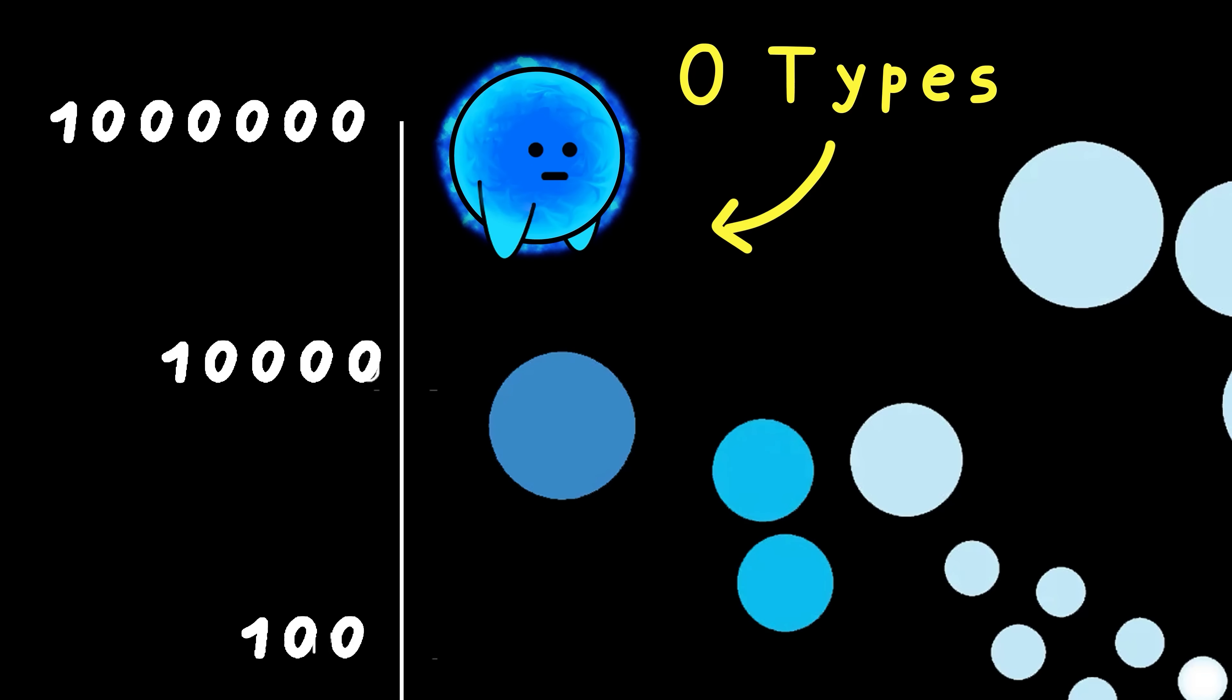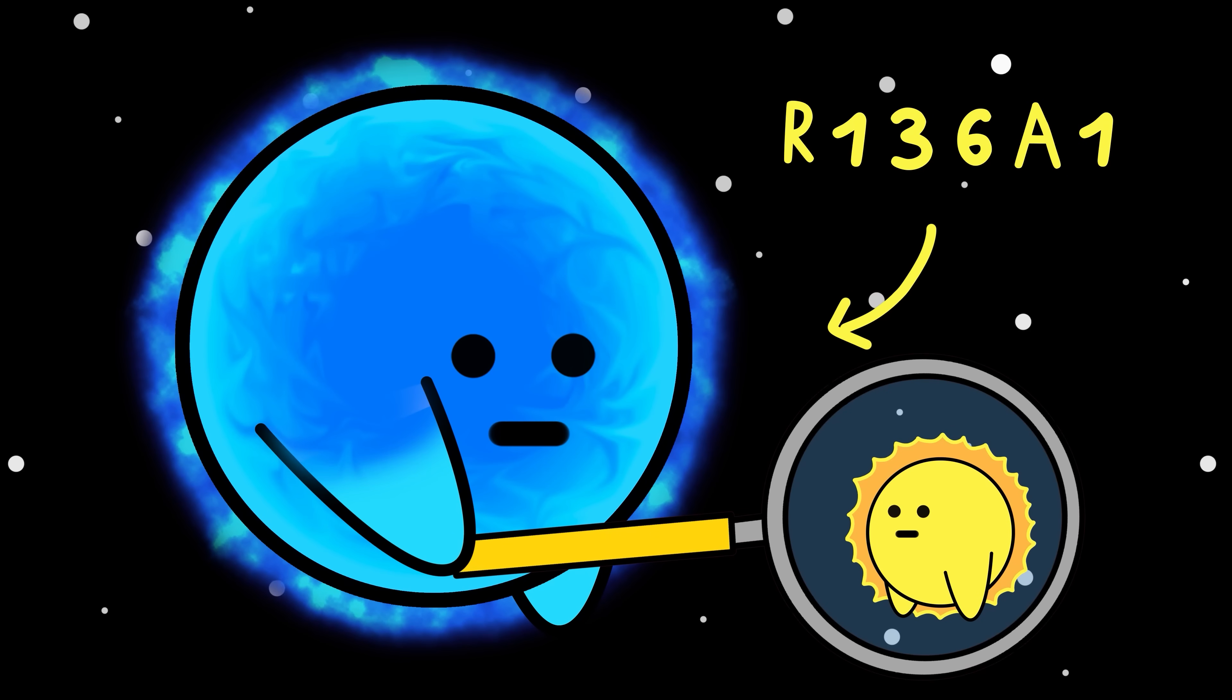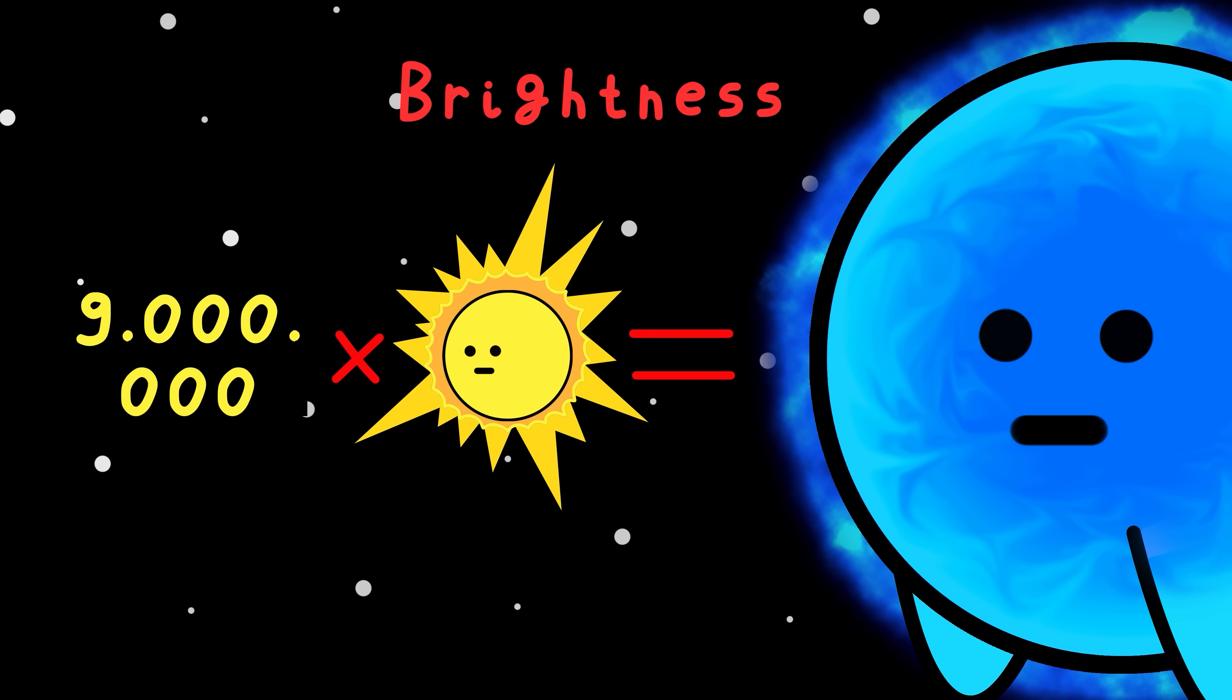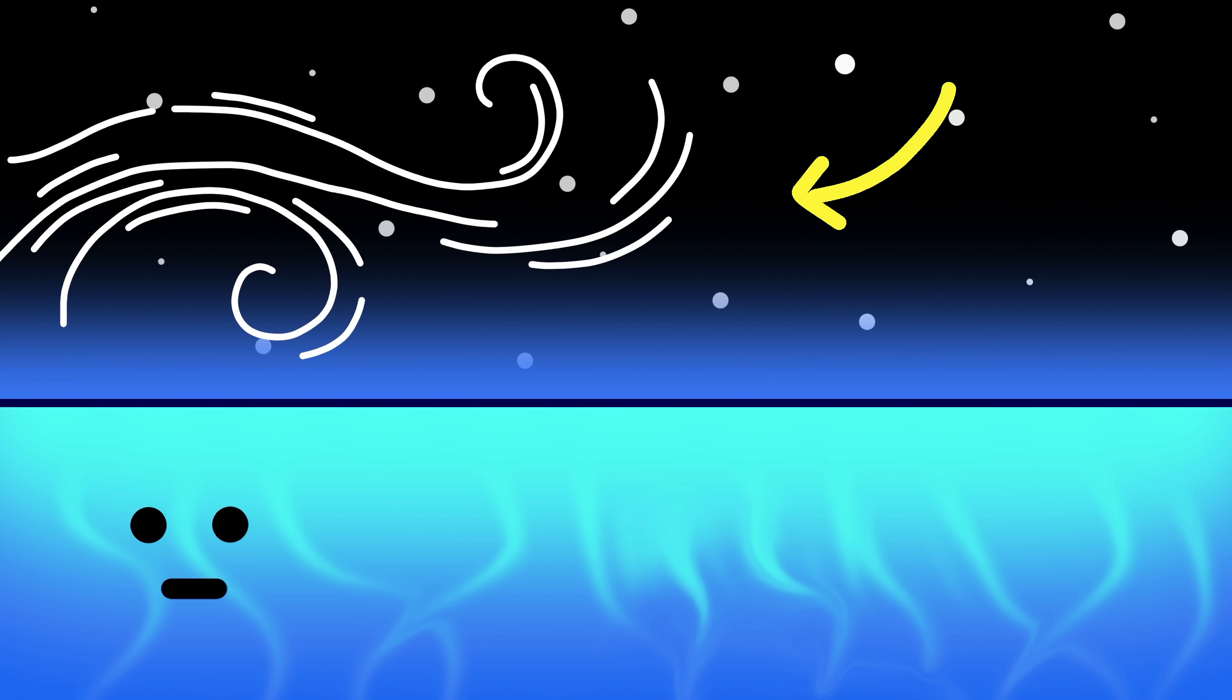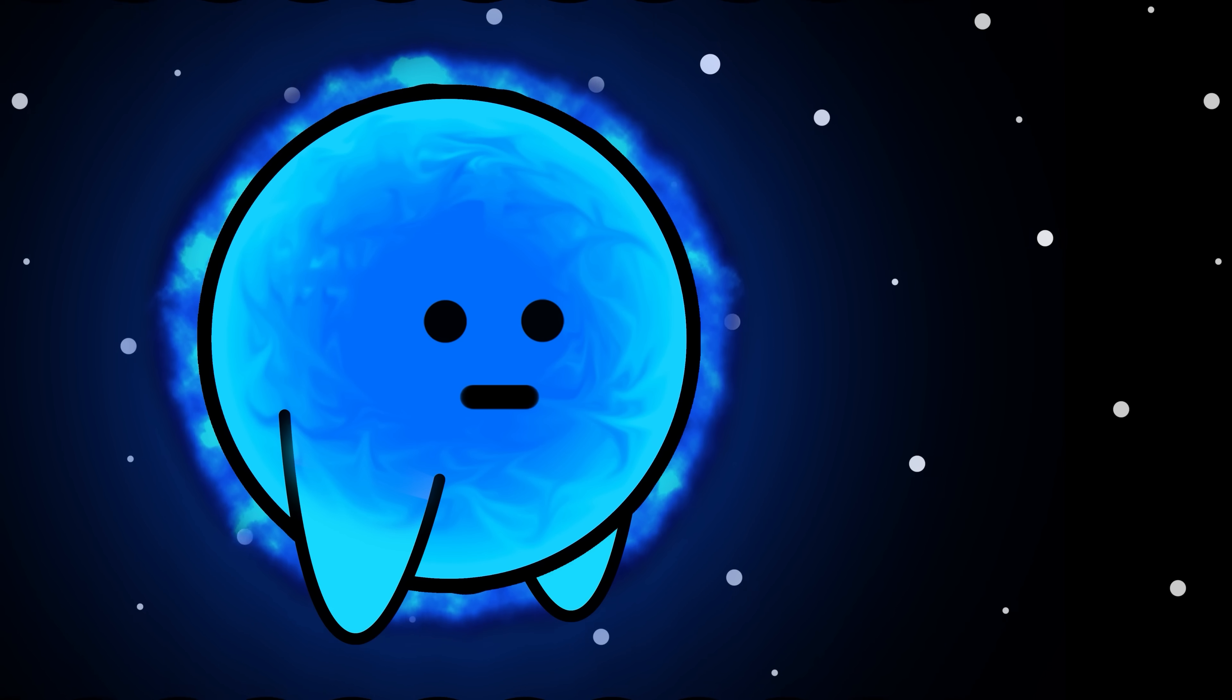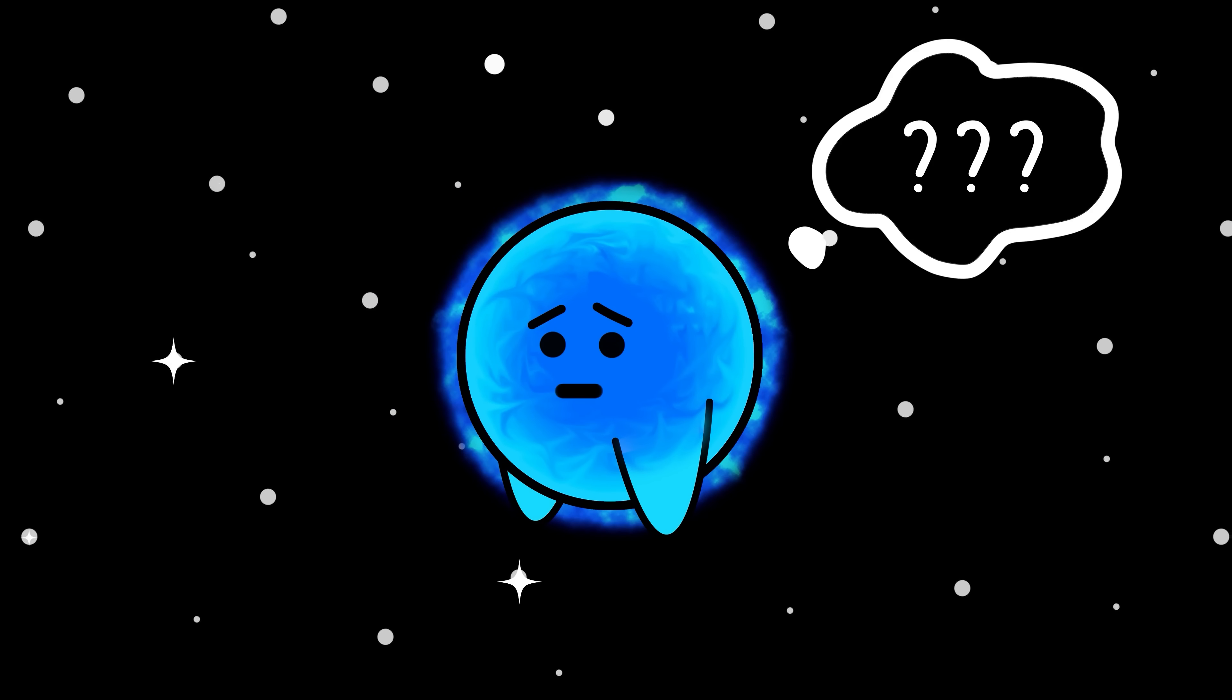These are called O-types and can evolve into Wolf-Rayet stars. Much like the most massive star ever discovered, R136A1. This is perhaps up to 291 times the mass of our sun. It's also 9 million times brighter than it as well. Surface temperature, 53,000 degrees. Radius, 40 times larger. And its winds? They blow off the equivalent of Earth's mass every single month. This thing is literally shedding like a snake. And the best part is that even with all the mass loss, it's still destined for the most violent end in the universe. A hypernova.